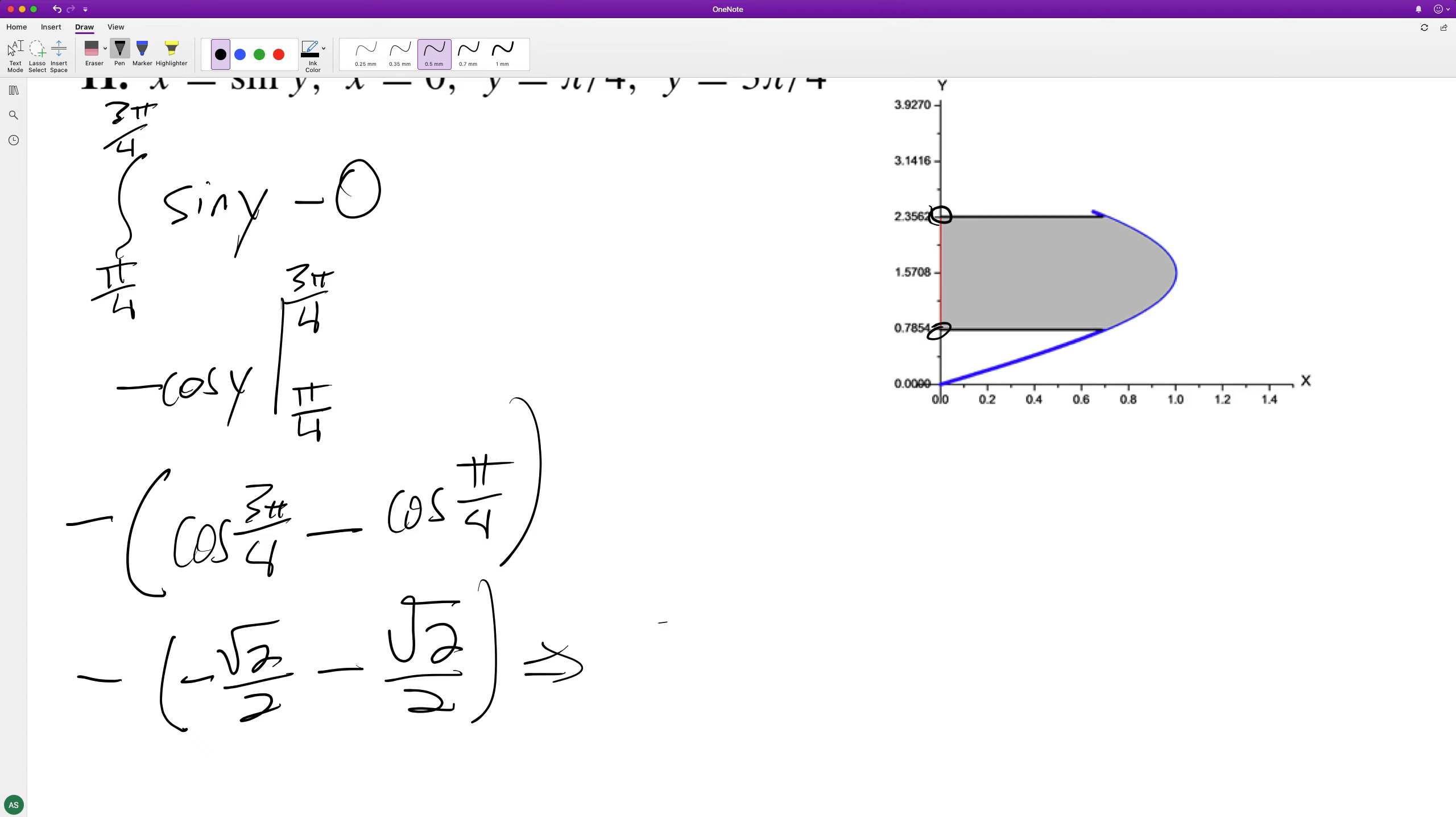What we end up with is negative - this becomes -2√2/2. The 2's cancel out, so we have just negative √2 on the inside and a negative on the outside, so it becomes positive √2. That's the area.